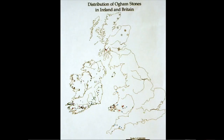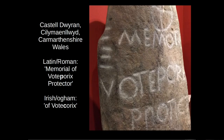Ogham stones are primarily found in Ireland but also in smaller numbers in areas of post-Roman Irish colonization in Wales, the southwest of England, the Isle of Man, and Scotland. Most of the Welsh inscriptions are bilingual, with an inscription in Latin script and language on the face and in Ogham on the edge of the stone. Here you can see an example of that, with the Ogham on the edge and the equivalent inscription in the Latin or Roman alphabet on the face.